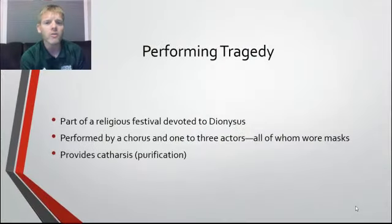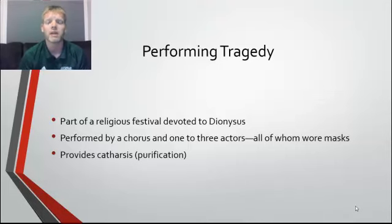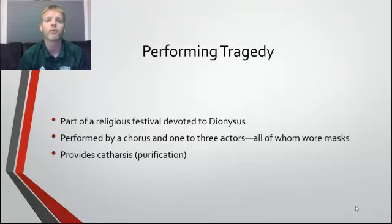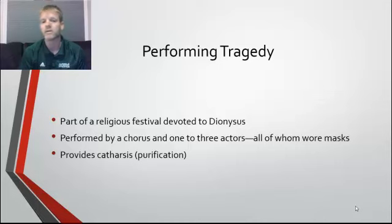Tragedy was performed as part of the religious festival devoted to Dionysus, performed once a year, as a big competition with three tragedians. Sophocles was probably the most prolific of all of them — we also talked about Aeschylus and Euripides. We're focusing on Sophocles because he made most of the changes. There was a performance by a chorus and one to three actors. Sophocles had a 15-person chorus and three actors on stage.